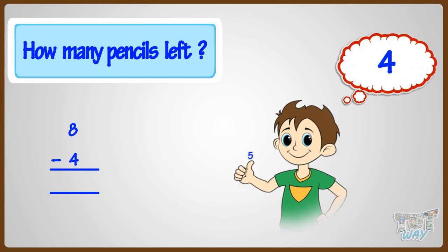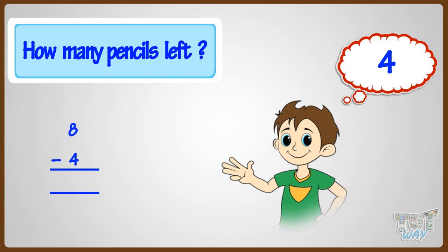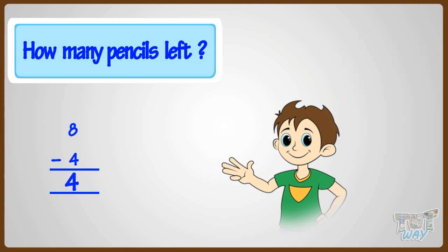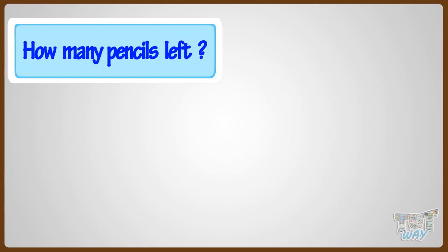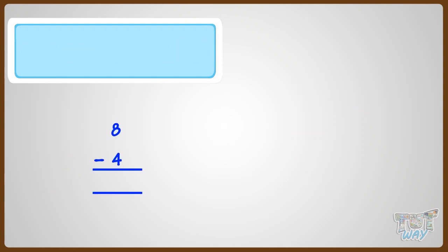Five, six, seven, eight. Now count the fingers. One, two, three, four. Yeah! Eight minus four equals four. We did it! Four pencils left in the stand.